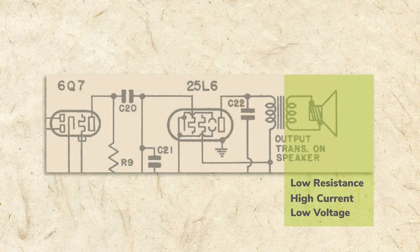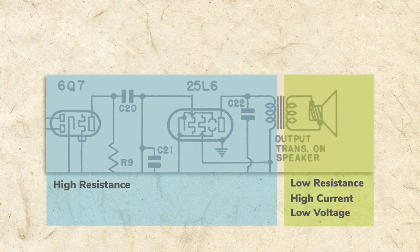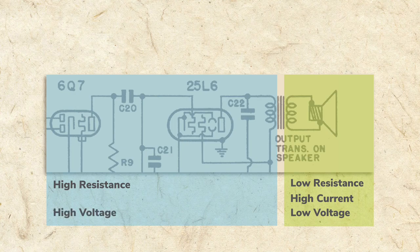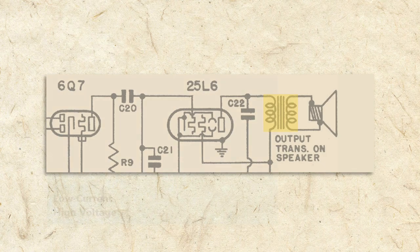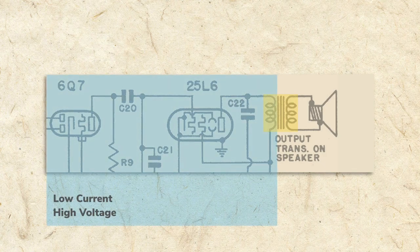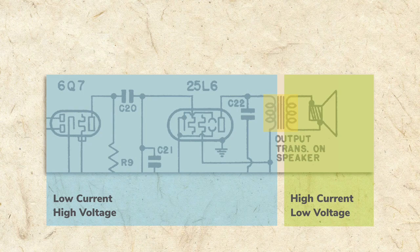Unlike the speaker, tube circuits have high resistance, which require high voltage but pass little current. The job of the output transformer is to transform the high voltage, low current signal into the low voltage, high current required by the speaker.